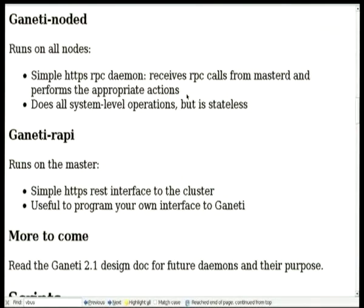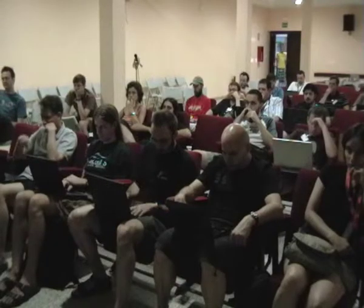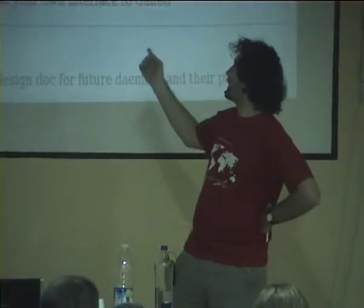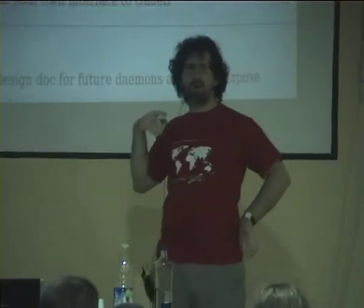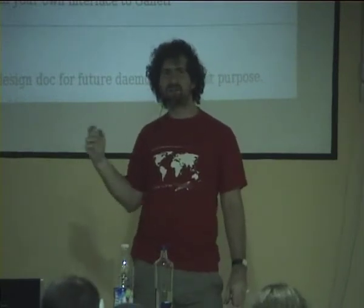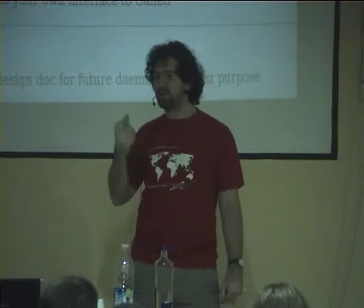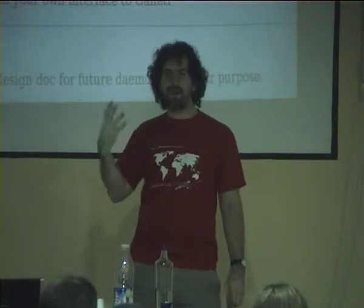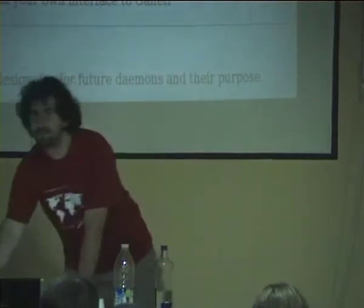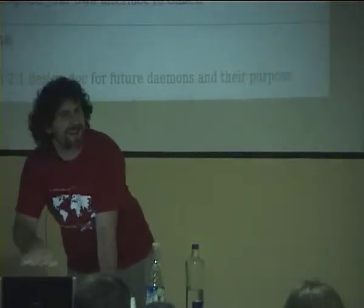Ganeti RAPI is also an HTTPS daemon, but it's used externally from the cluster in order to actually interact with Ganeti. If you want, you can just interact with scripts, but if you want to build a web interface, a graphical GTK interface, or something else that interacts with a Ganeti cluster, you can do that through RAPI. RAPI doesn't support all operations available in the cluster, just some of them, but it's very easy to add new ones — basically you just need to decode an HTTP request and submit a job using the provided library. Around ten lines, they say.